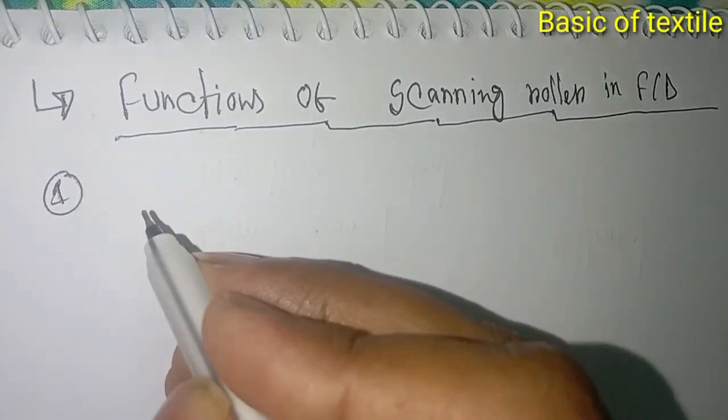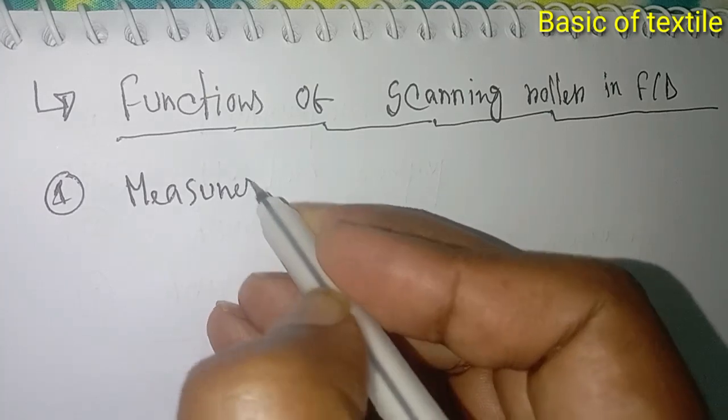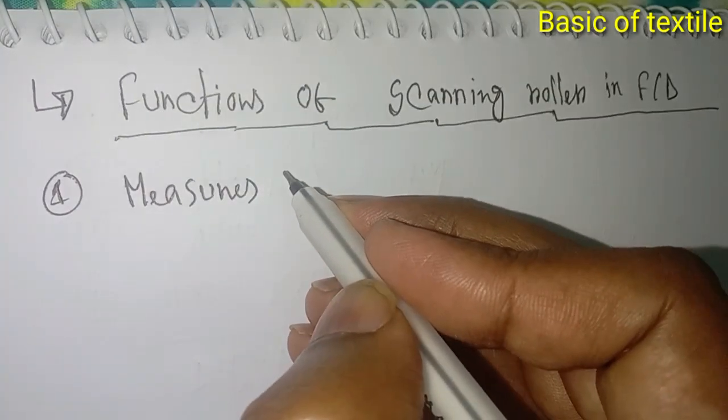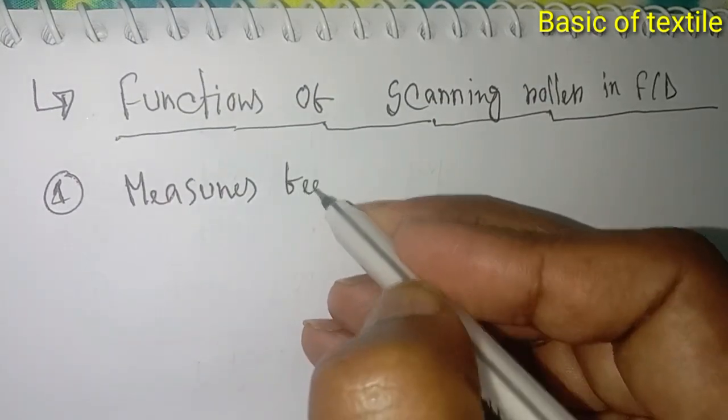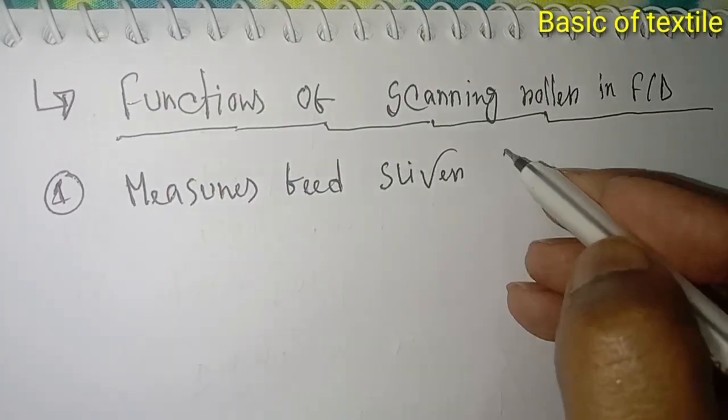Number one: measures feed sliver density.